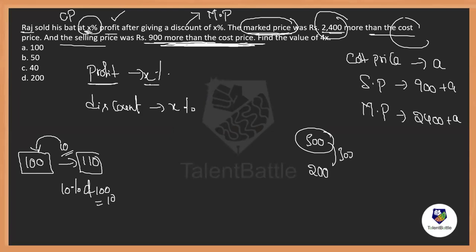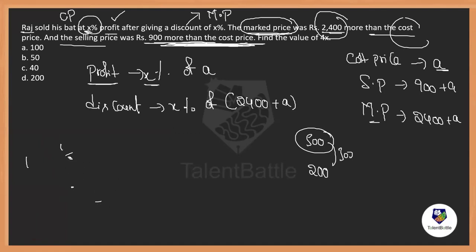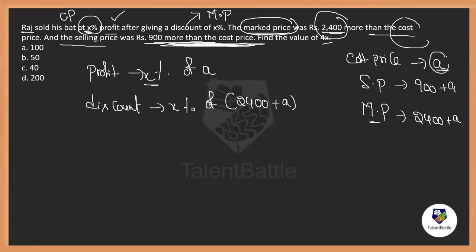So profit X percentage is X% of A (cost price), and discount X percentage is X% of (2400 + A), since the marked price is A + 2400. We need to identify the value of X, but there are two unknowns: A (cost price) and X (profit/discount percentage). So we need to find a way to work with both unknowns.